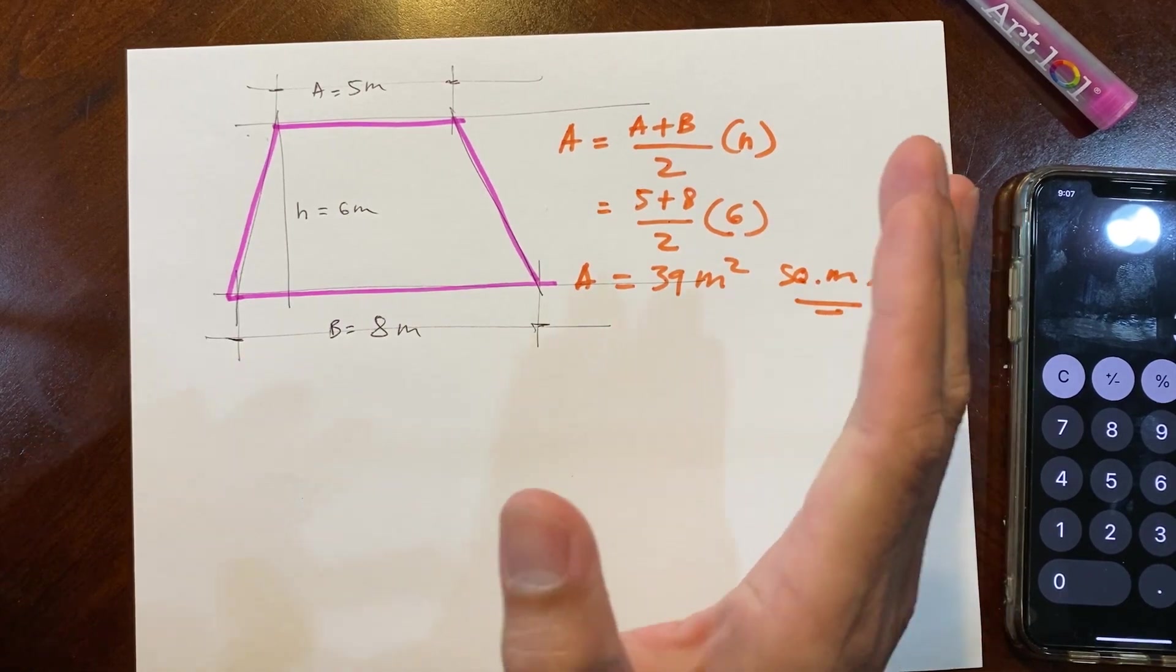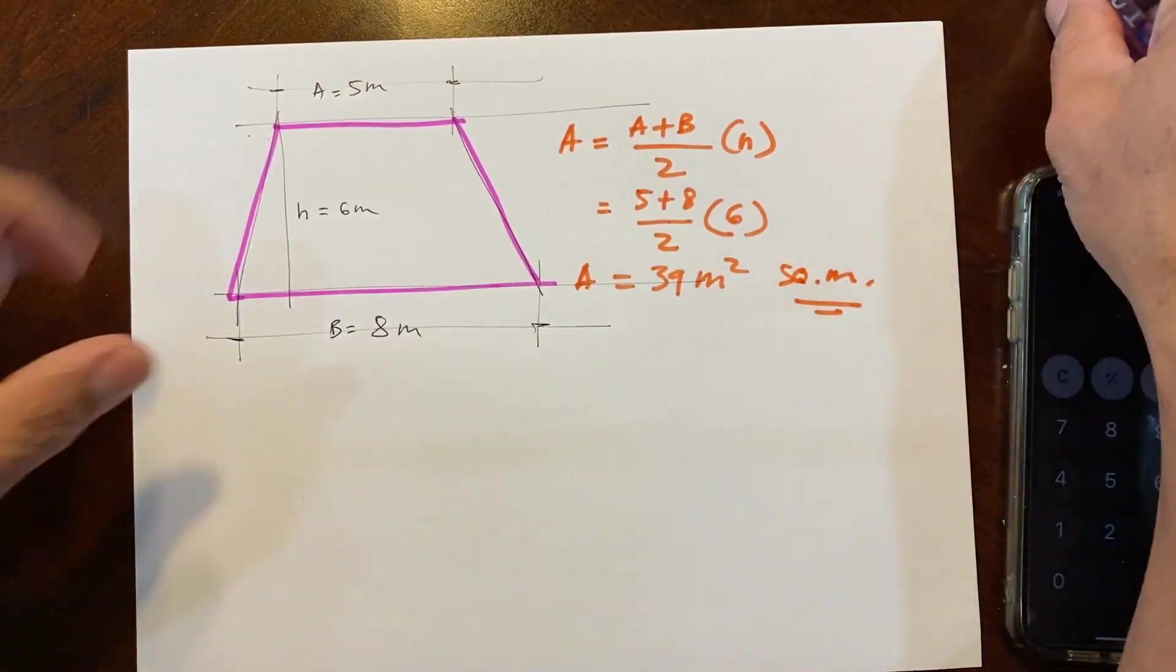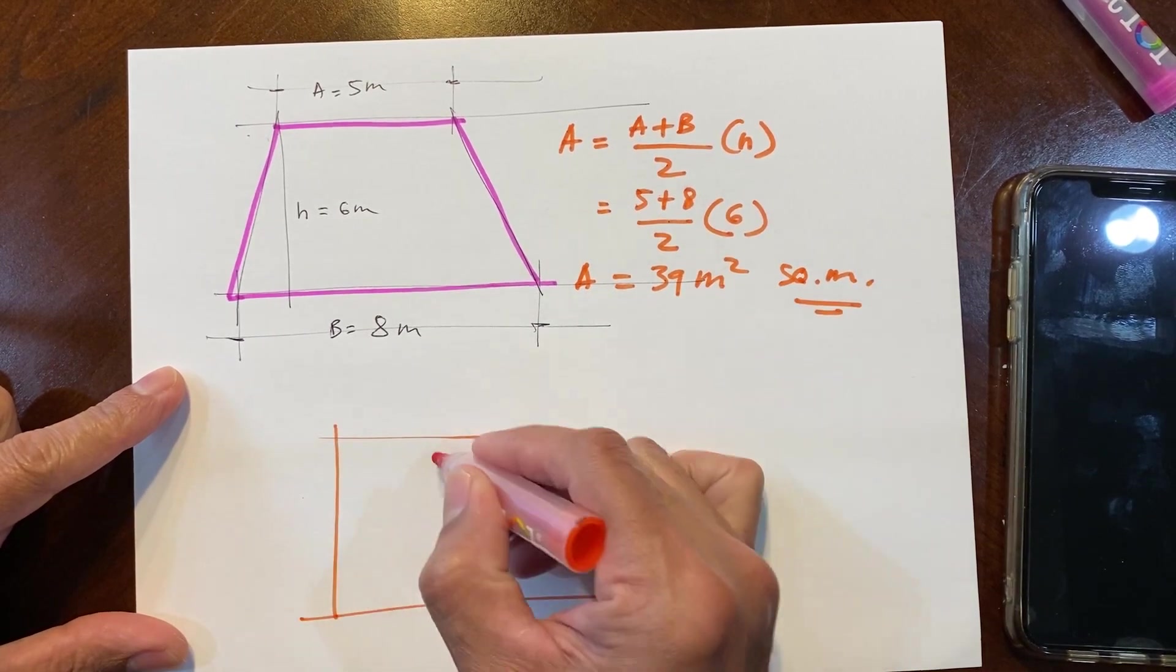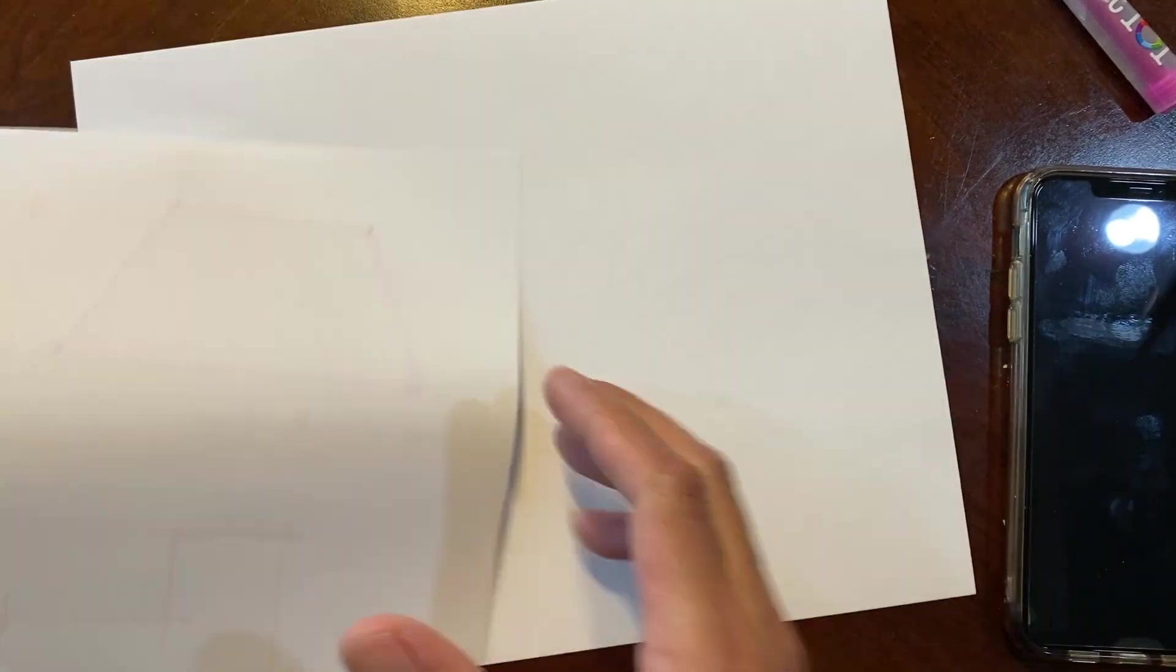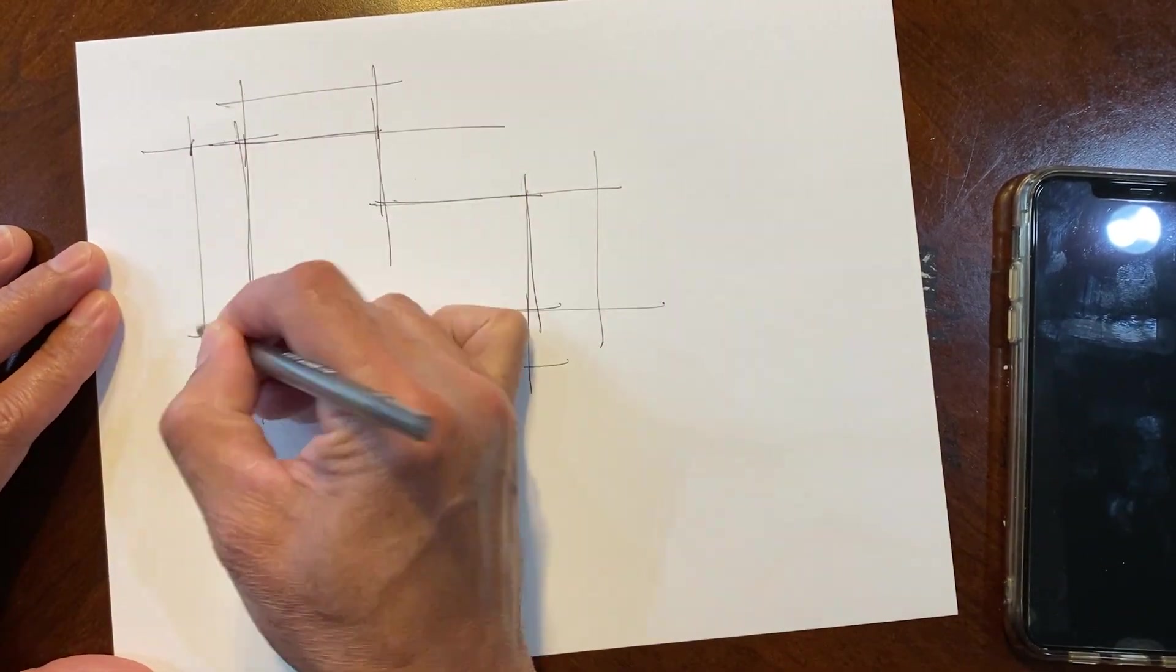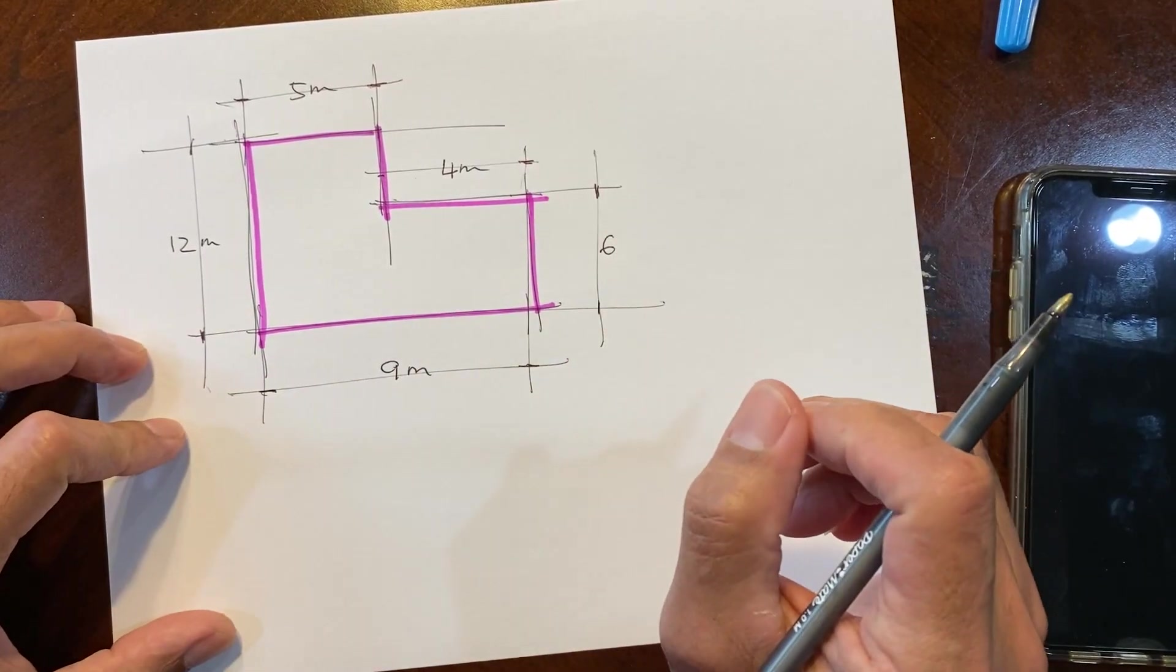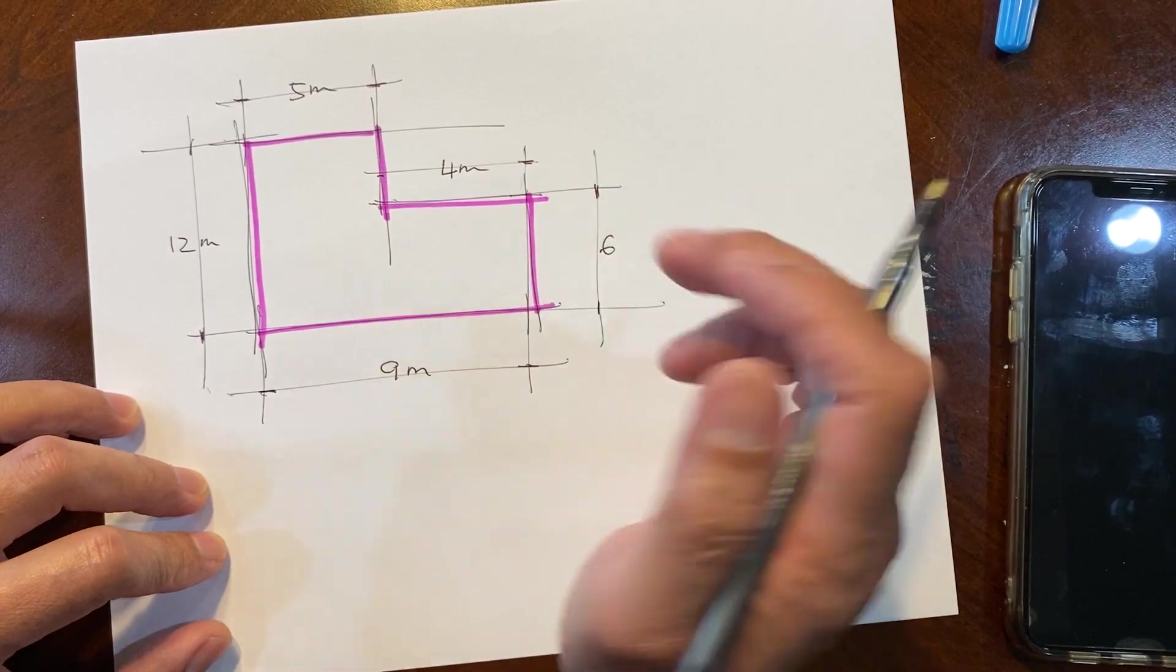Now we're gonna move to another lot, which is commonly an L-shaped lot. So we're gonna try to find the area of the L-shape. We'll get all the dimensions. But we don't have a formula of this kind of lot.